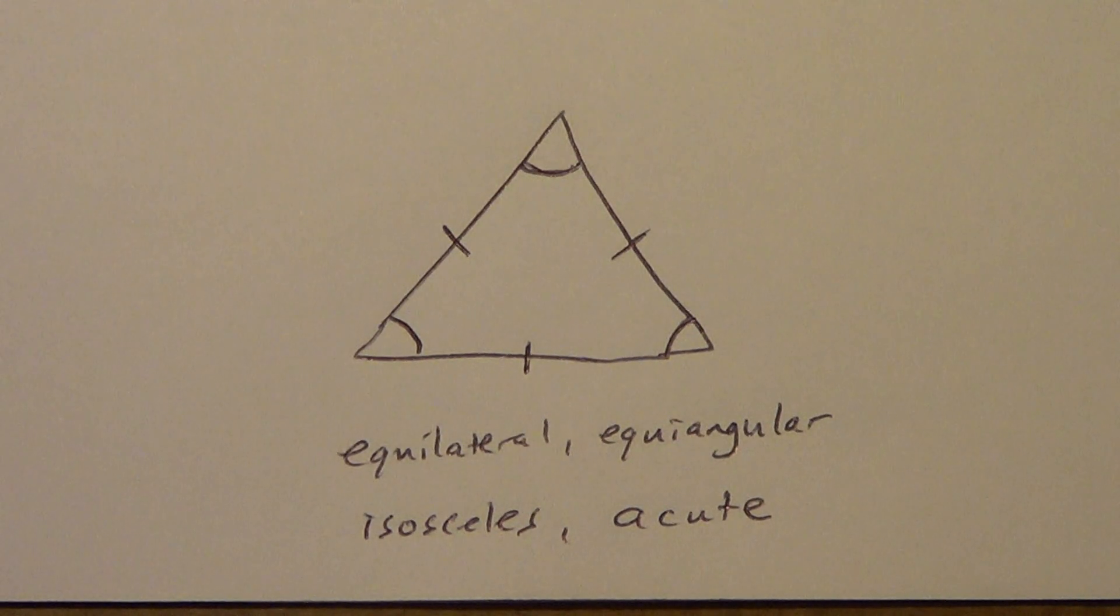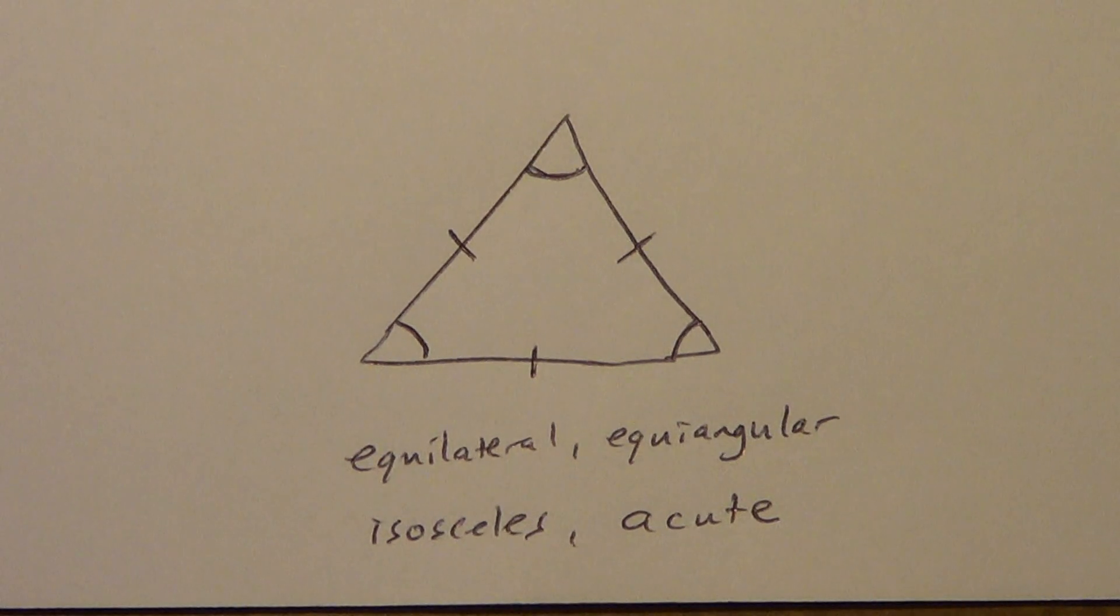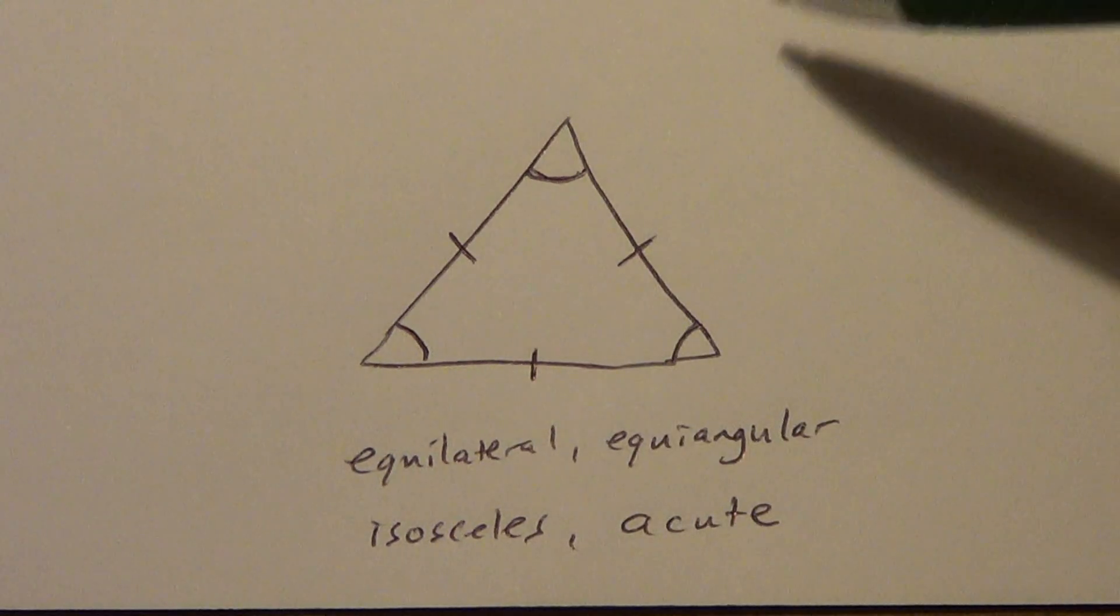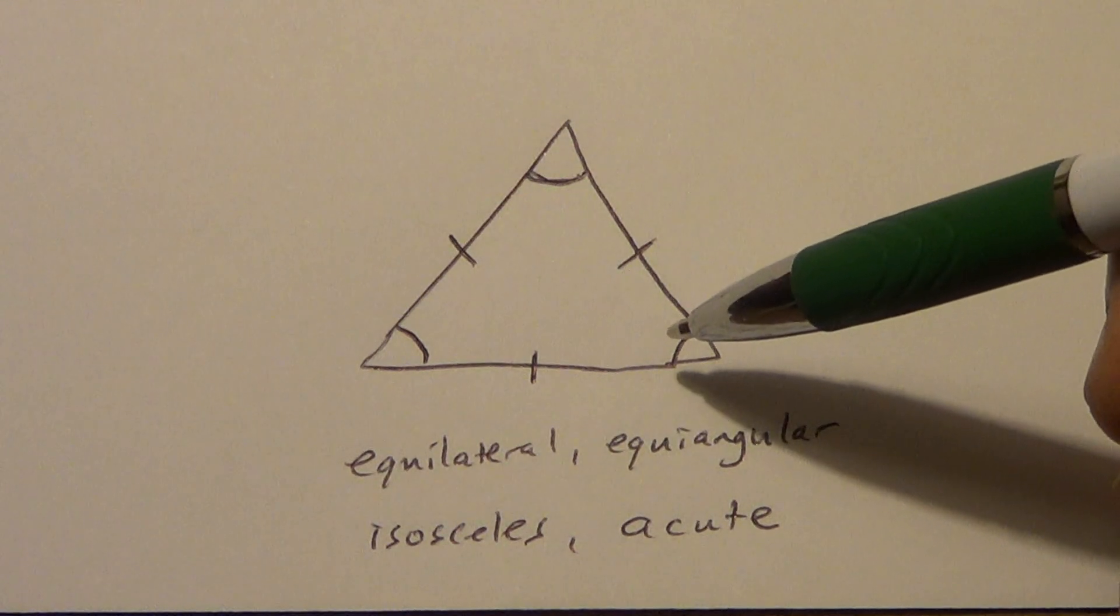Now, there are some things you cannot do. You cannot draw an obtuse equilateral triangle. Okay. It's impossible to do in flat surface geometry. All right. In planar geometry. So there are a few combinations, but most of them you can do. Most of them you can do. All right. So you need to be able to either draw what I tell you or just look at a drawing and then identify what it is.